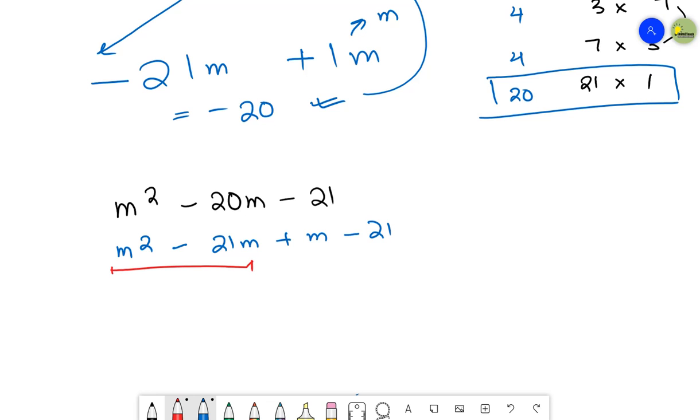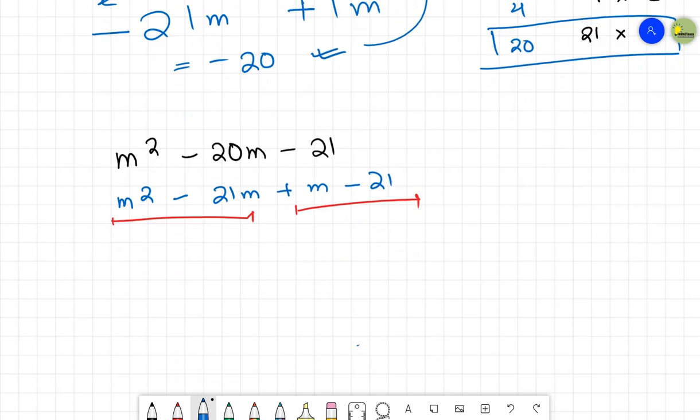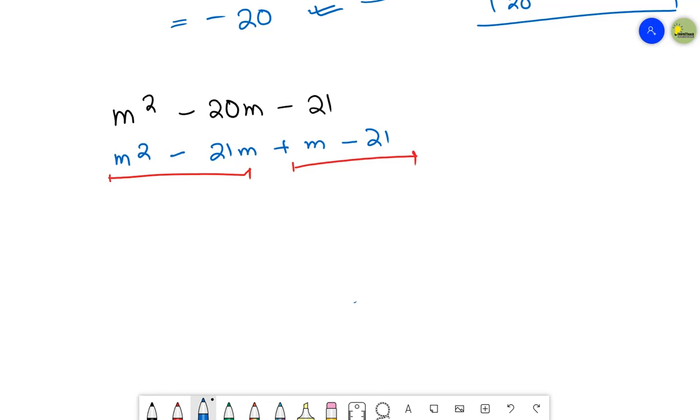Now what you have to do: make the pairing of two-two numbers and find out the common values. In m² - 21m, your m is common. Inside you'll have m - 21. Then you have +m - 21. In m - 21, there's nothing common, just take out 1 common. When 1 comes out common from something, the inside values remain as they are, there's no change in them.